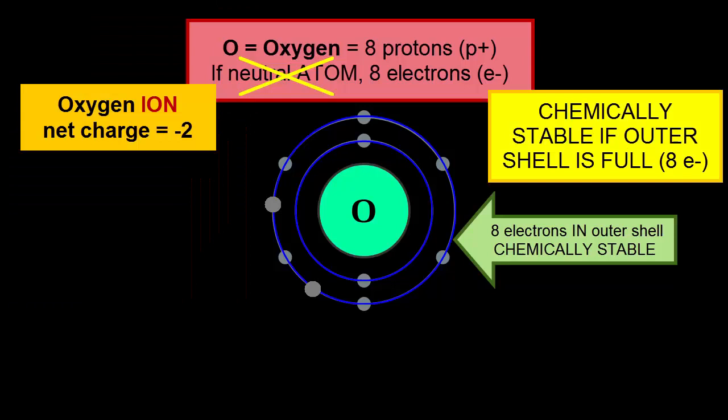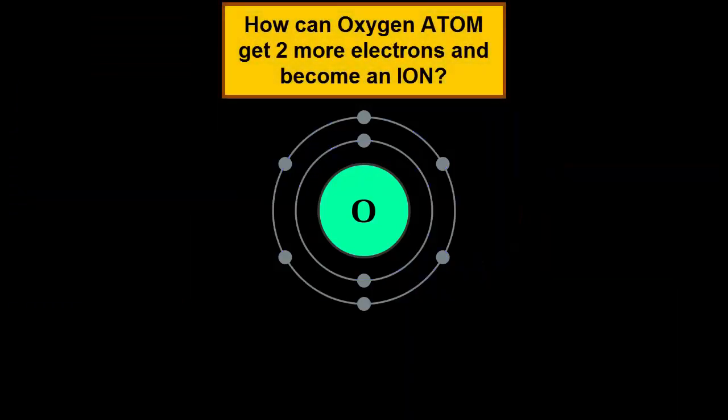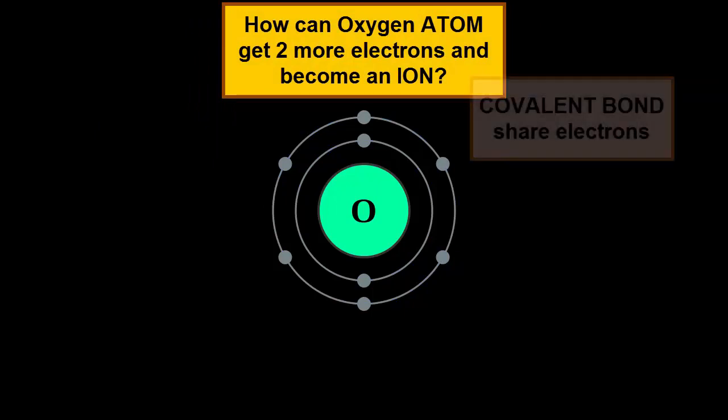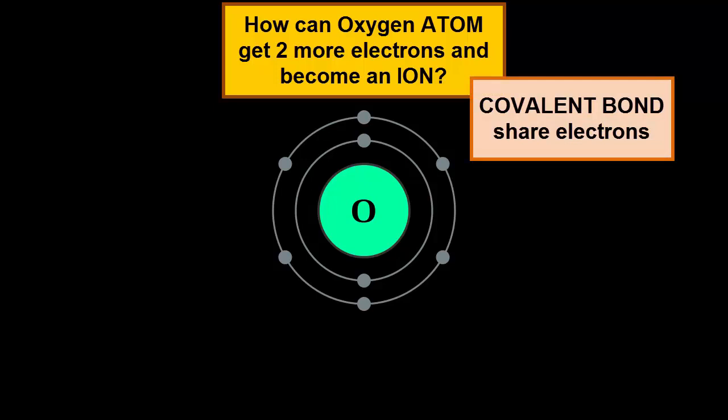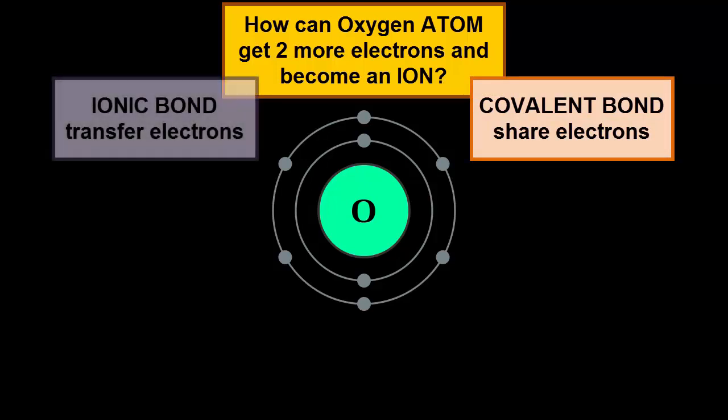Minus two. Would it be stable? Yes. So how can it arrange to get two more electrons? Two basic ways, or bonds. Sharing electrons, a covalent bond. Or transferring electrons, an ionic bond.